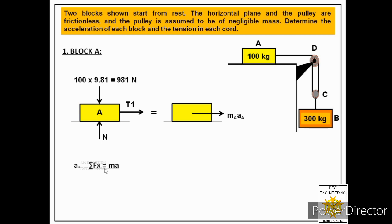Applying Newton's second law in the x-direction: ΣFx = m·a. The only force in the x-direction is T1, so T1 = 100·aA. Since this equation has two unknowns — T1 and aA — we cannot solve it yet. We label this as Equation 1 and move on to the second block.